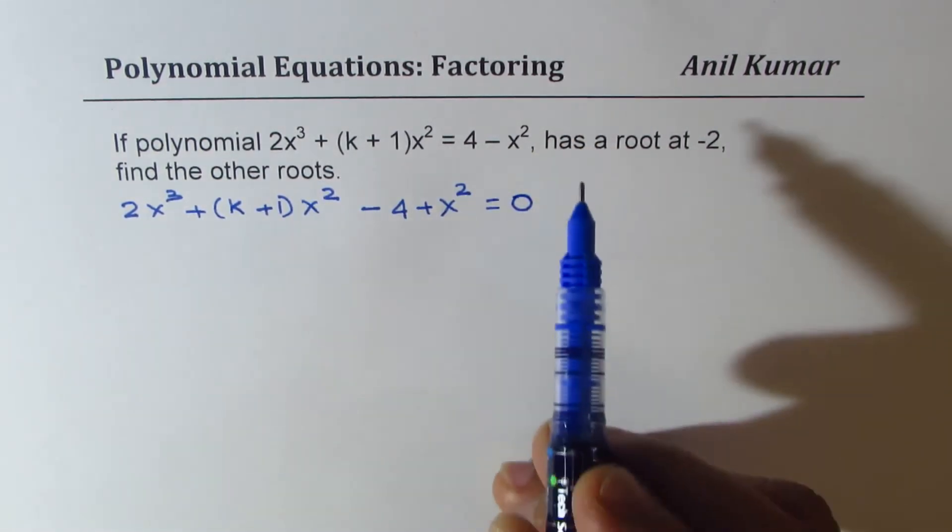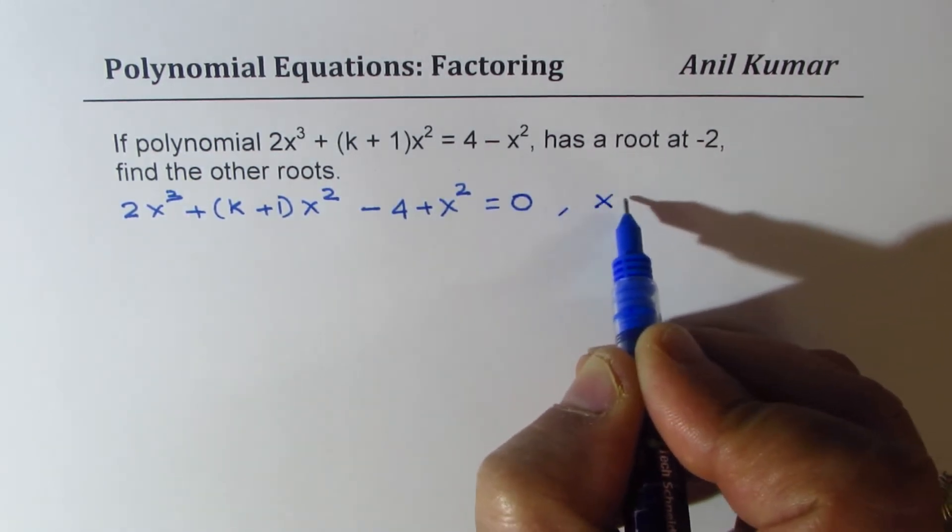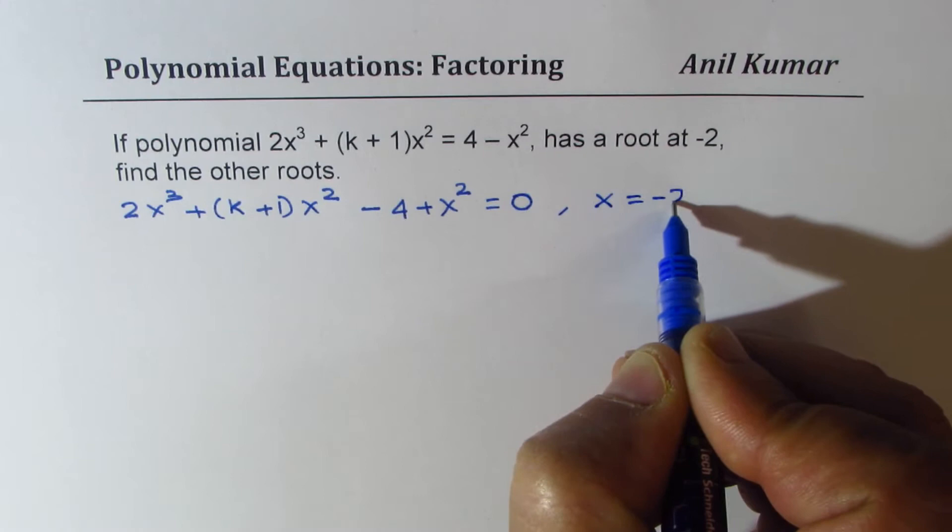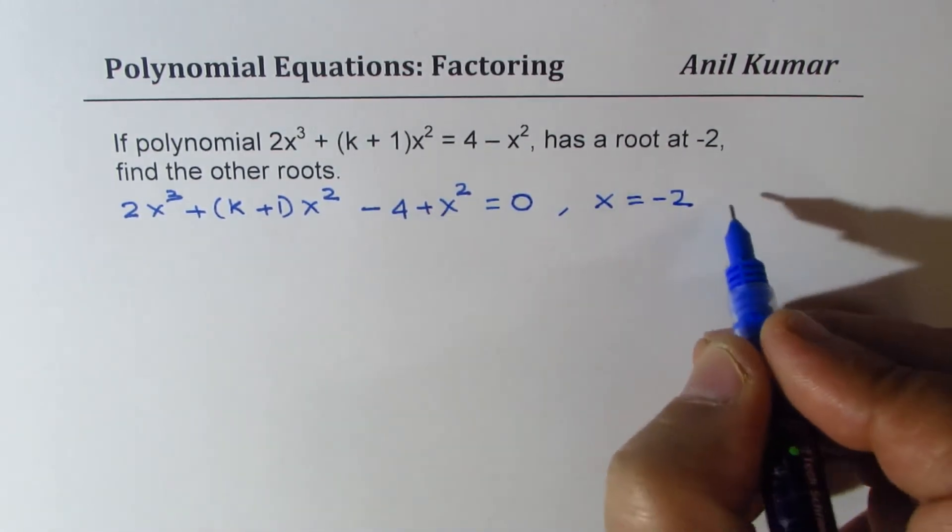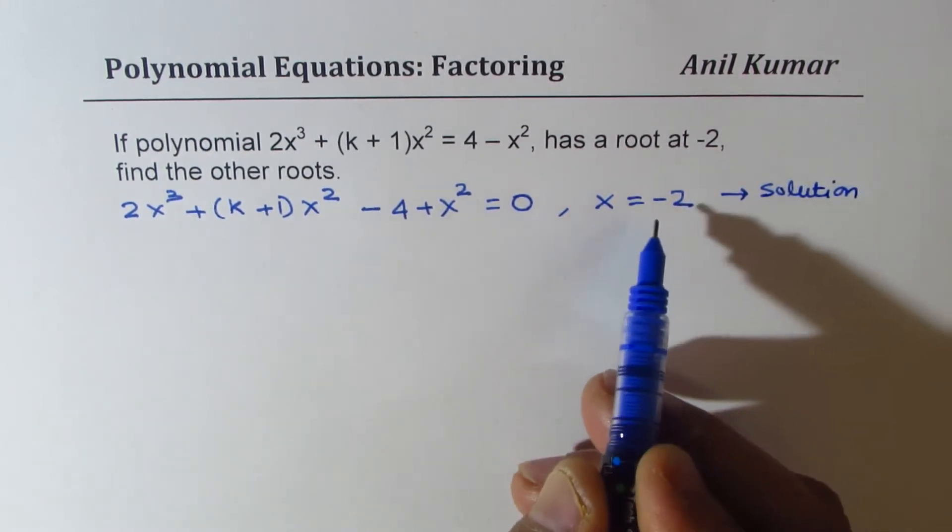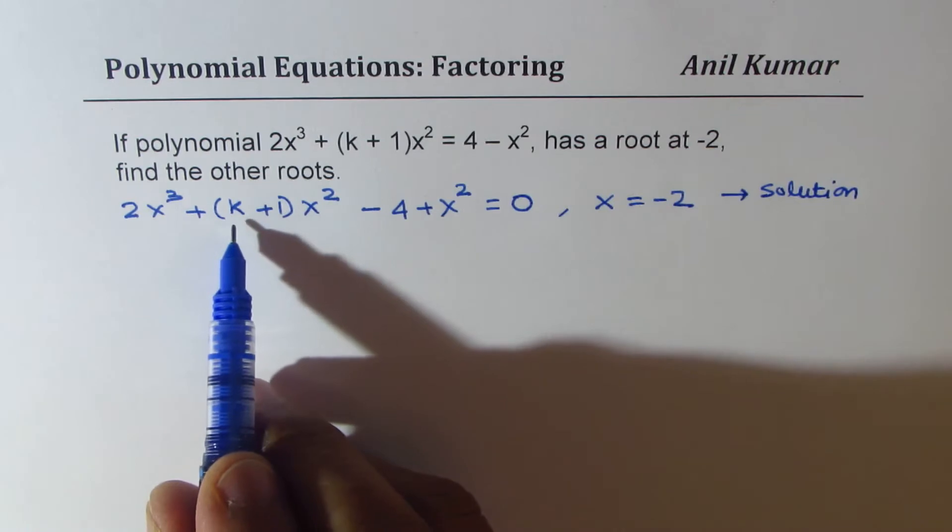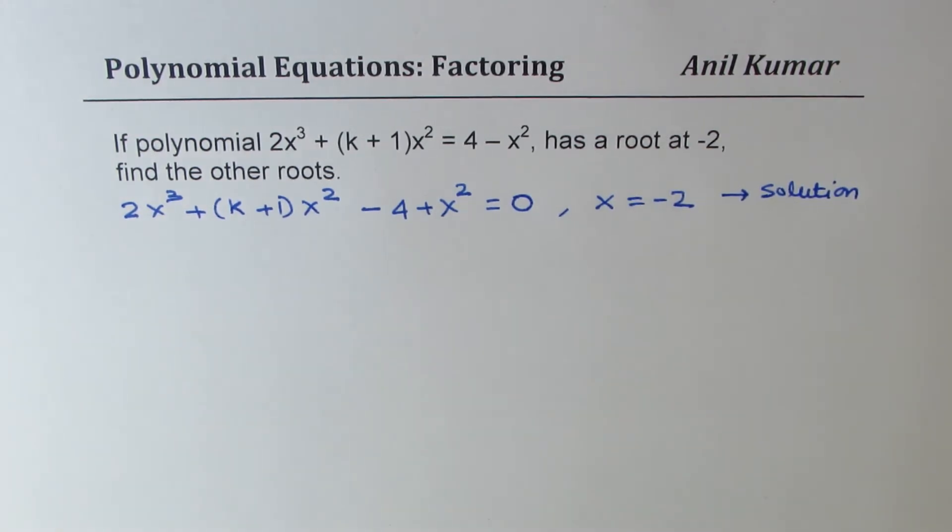that means at x equal to -2, we have a solution to this. It leads to a solution. Substituting -2 will satisfy the equation and also help us to find the value of k. That's the whole idea.